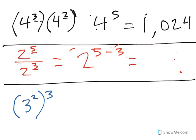5 minus 3. That's equal to 2 squared, which is what we just had, or 4.